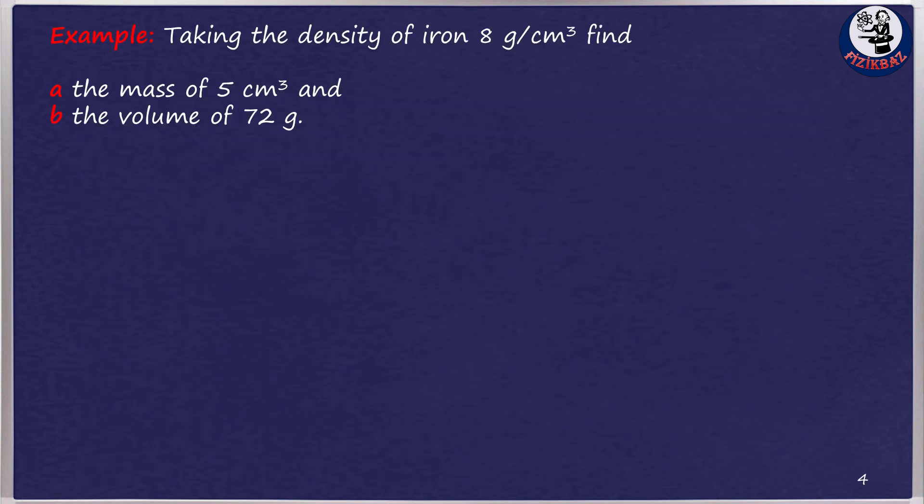Let's solve an example question about the simple formula we just learned. Taking the density of iron, 8 gram per cubic centimeter, find A, the mass of 5 cubic centimeter and B, the volume of 72 grams. Now we will use our formula. This is the famous formula for density, as you know.